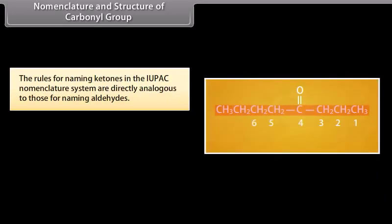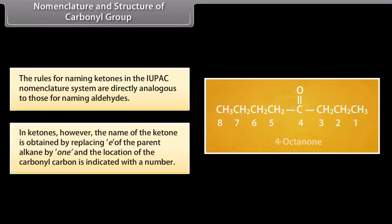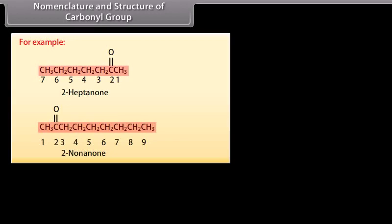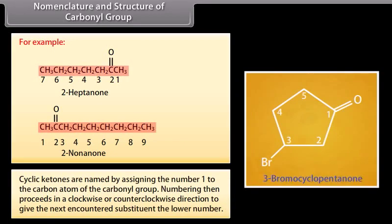The rules for naming ketones in the IUPAC nomenclature system are directly analogous to those for naming aldehydes. In ketones, however, the name is obtained by replacing the '-e' of the parent alkane with '-one', and the location of the carbonyl carbon is indicated with a number — for example, 2-heptanone, 2-nonanone. Cyclic ketones are named by assigning number 1 to the carbon atom of the carbonyl group, with numbering proceeding clockwise or counterclockwise to give the next substituent the lower number.